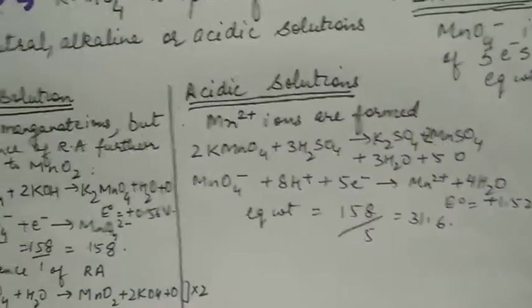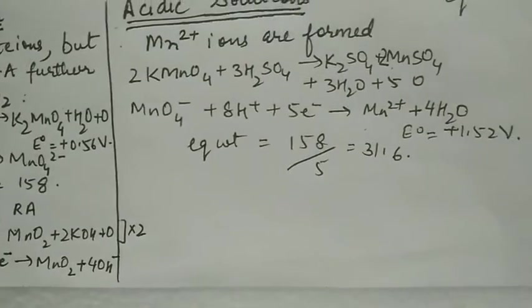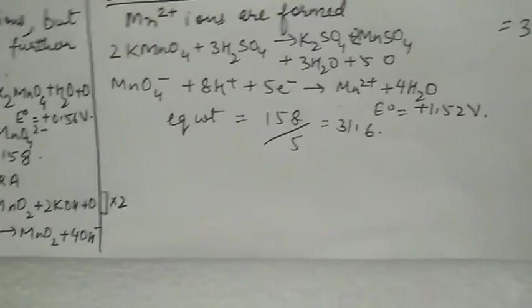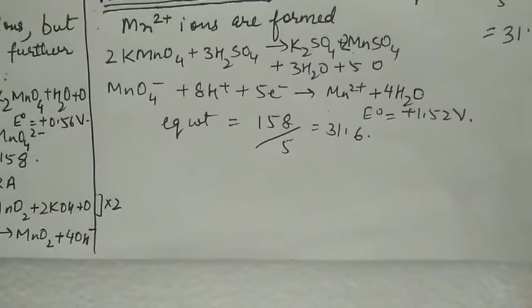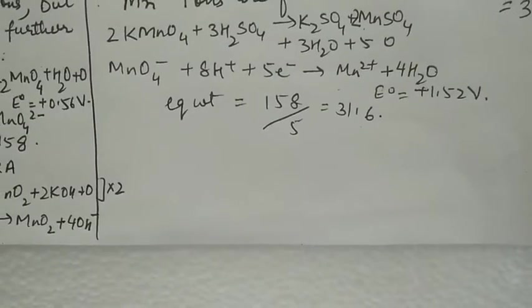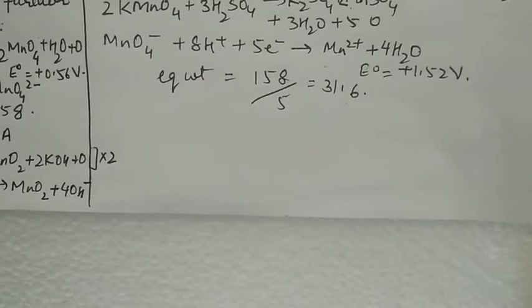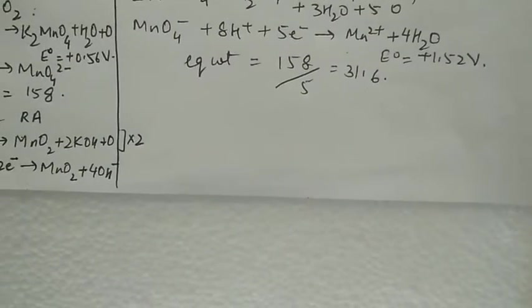In acidic solution, Mn2+ ions form. KMnO4 reacts with acid to form potassium sulfate, manganese sulfate, water, and five oxygens. In this case, five electrons are taken. Equivalent weight becomes 158 divided by five, equal to 31.6.